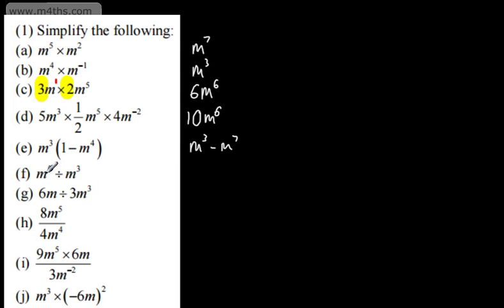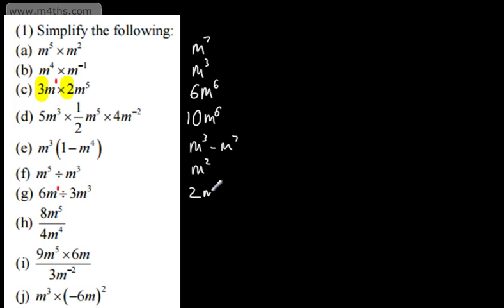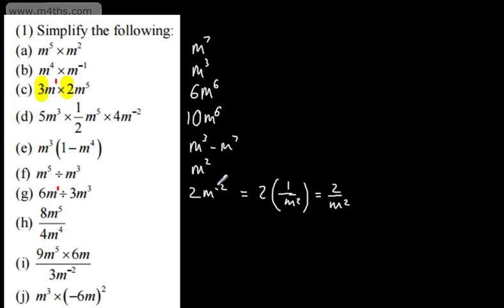Now moving on to division. m to the power of 5 divided by m to the power of 3 — we subtract the powers — gives m to the power of 2, or m squared. Here we've got 6 divided by 3, which gives 2. We have m to the power of 1 — remember, this is not a 0 — divided by m to the power of 3. Subtracting the powers gives m to the power of minus 2, so the answer is 2m to the minus 2, which is perfectly fine.